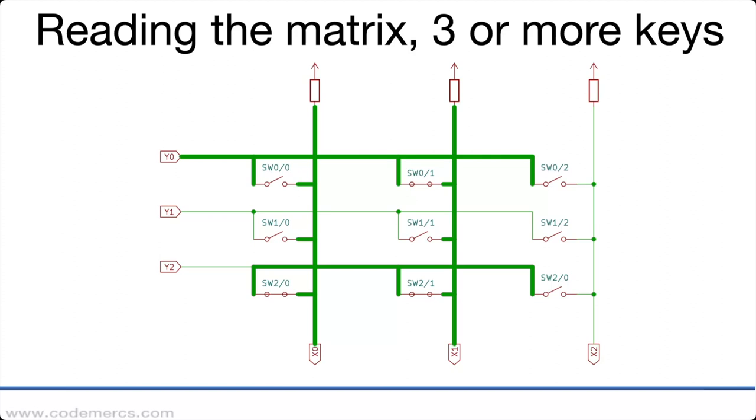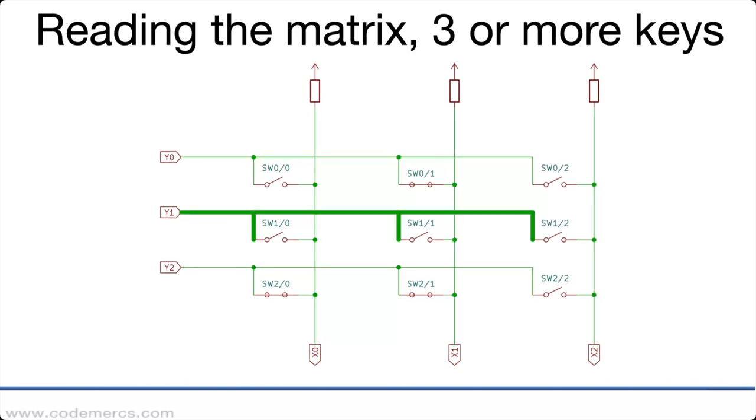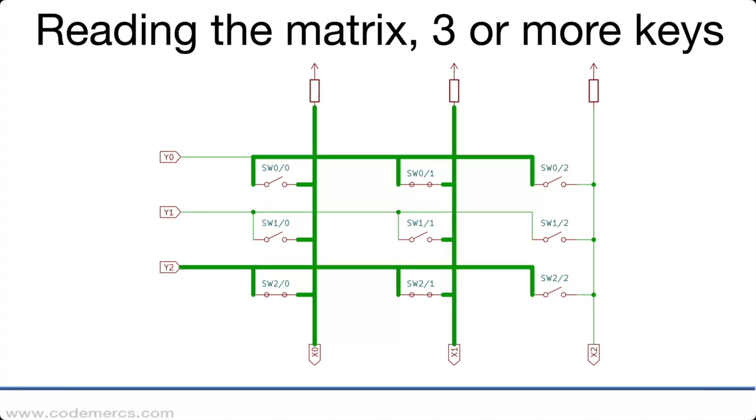On the y1 line we have no active key so there is no problem. And on the y2 line we still can tell whether the keys are actually pressed, but in this case it gives us the correct status of the matrix.